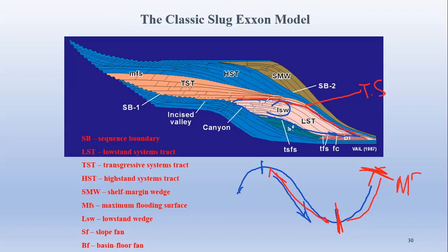Above the transgressive system track, when there is maximum rise of sea level, that is represented by the MFS — the Maximum Flooding Surface. You can observe here that this will be the MFS for the transgressive system track. After the maximum flooding surface, there is a slow sea level rise, then a standstill for some time, followed by the start of regression.